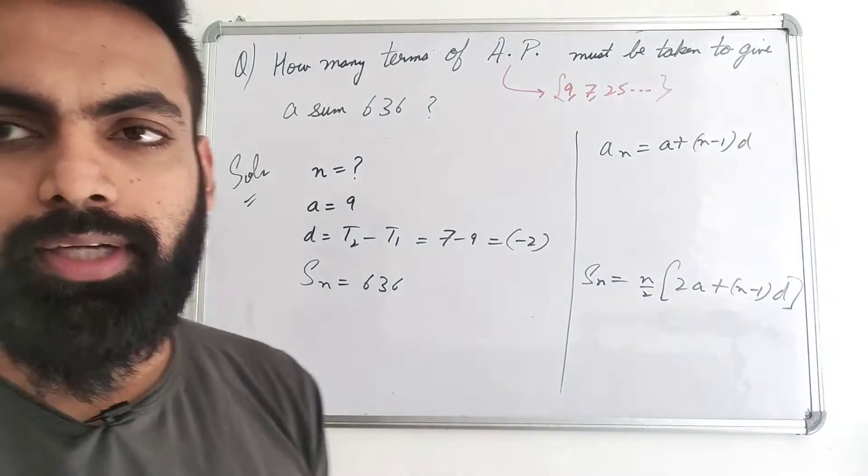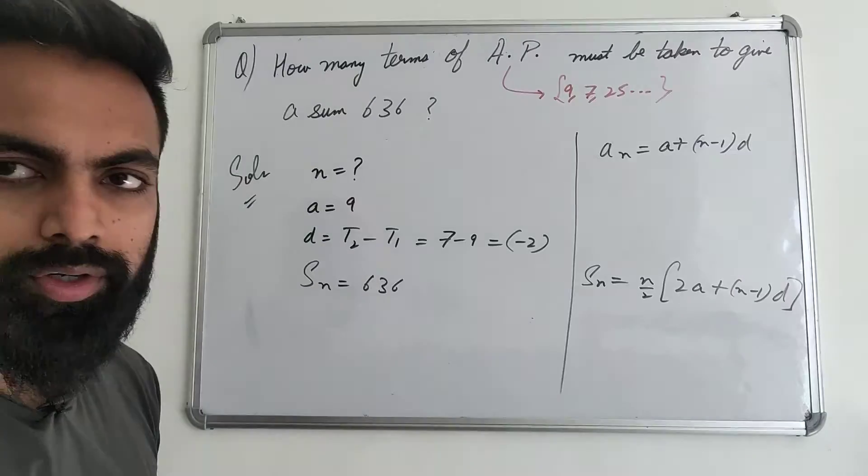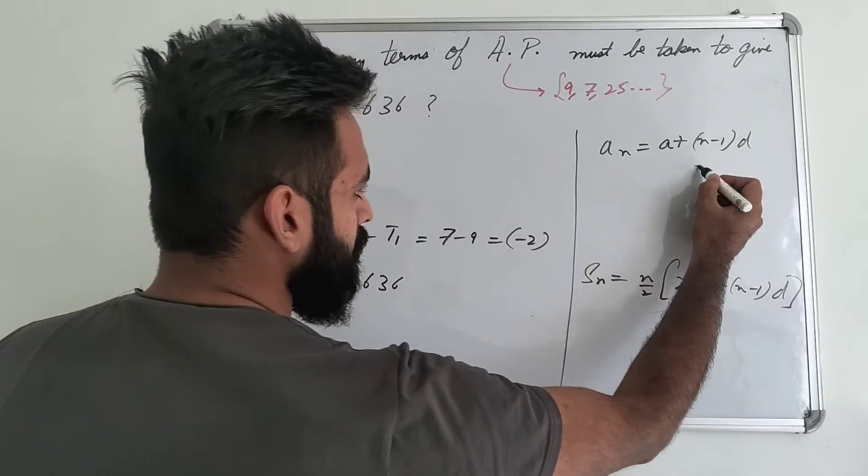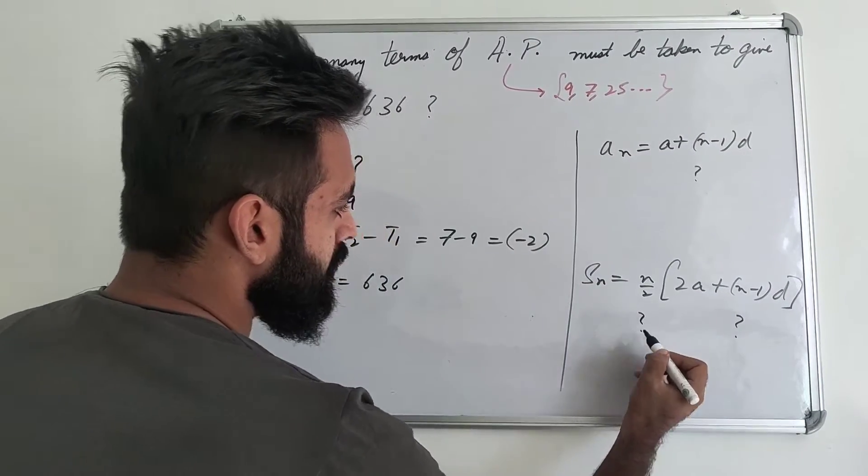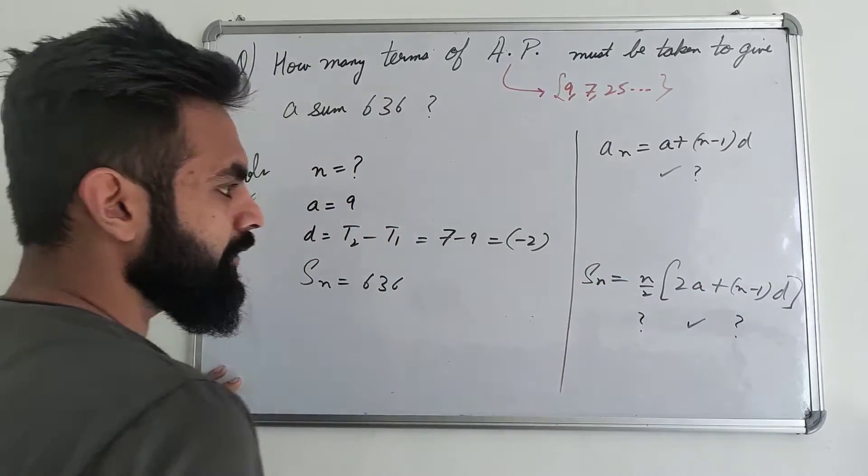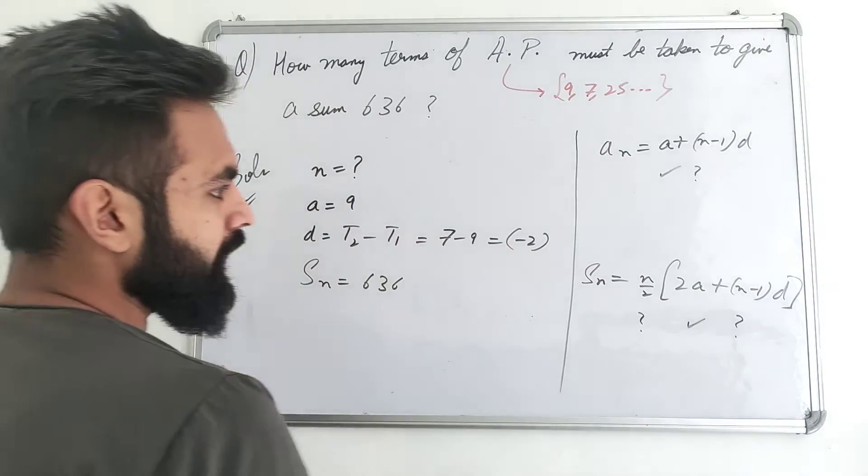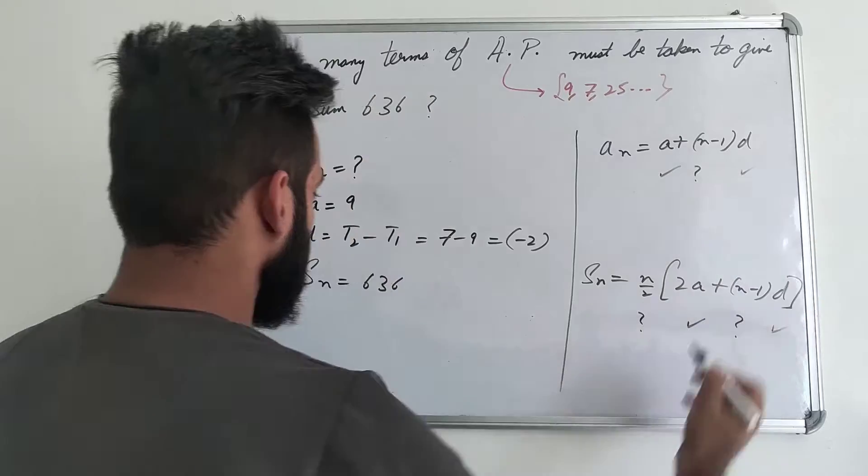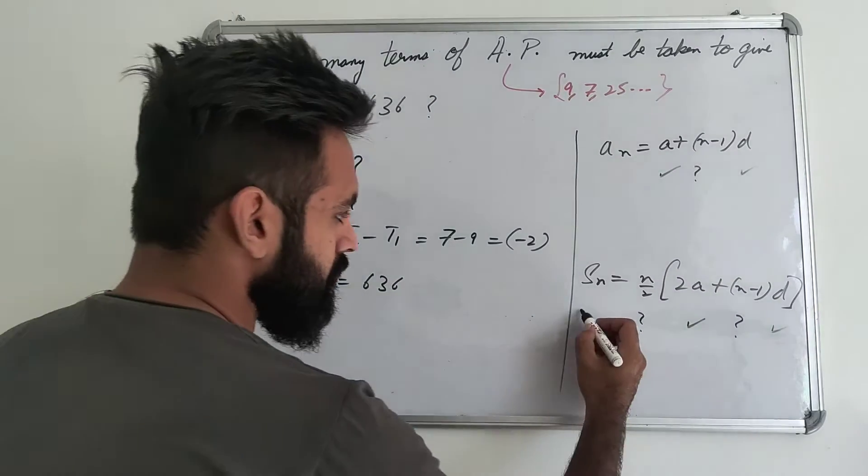Now, you will take where you have values given. For example, N is missing, so I have a question mark here, so I don't know here and here. A value is 9, so I will take here and here, so I can add value. D value is minus 2, so D can add here and here. SN is 636, so you can add here.